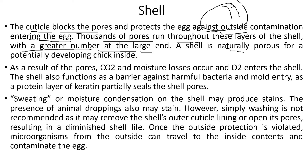The shell is naturally porous to support a potentially developing chick inside. The outer cuticle is very important for preventing contamination because the other two layers are not very hard and contain pores which may allow exchange of gases, including entry of oxygen that allows growth of microorganisms. To prevent spoilage, the outer cuticle must be preserved as it blocks the pores and protects against outside contamination.